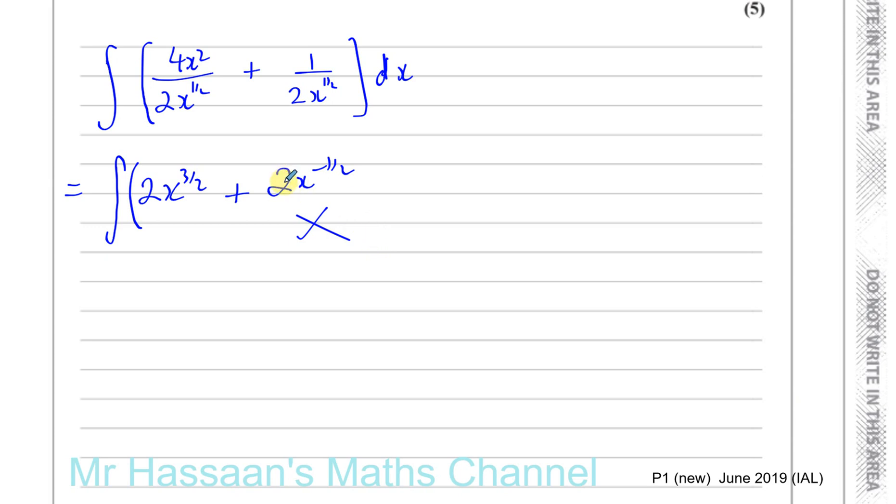Okay, because the 2, the power of half doesn't apply to the 2 here, it's only to the x. So what you have to do here is you have to write this as the 1 over 2 stays as it is, and you've got x to the power of negative half. It's only the x that you can say moves up when you do this. Okay, so this is not the same as 2x to the power of minus half, it's a half x to the power of minus half.